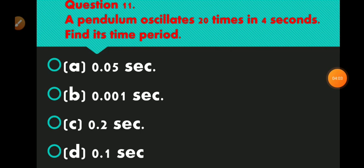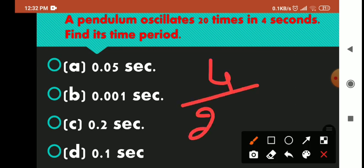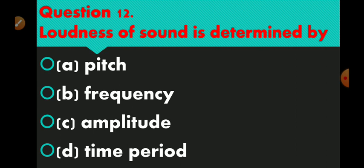Question number 11 is: a pendulum oscillates 20 times in 4 seconds. Find its time period. We calculate: 4 divided by 20 = 1/5 = 0.2 seconds. Option number C is correct — 0.2 second.